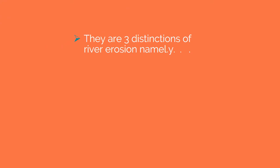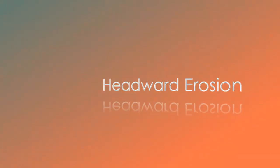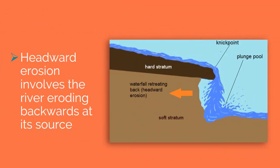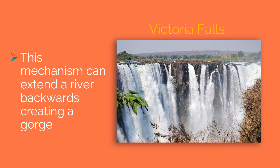There are three distinctions of river erosion. Headward erosion involves the river eroding backwards at its source. This mechanism can extend a river backwards, creating a gorge.